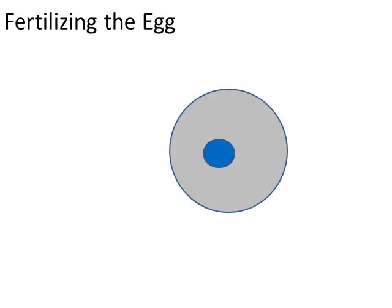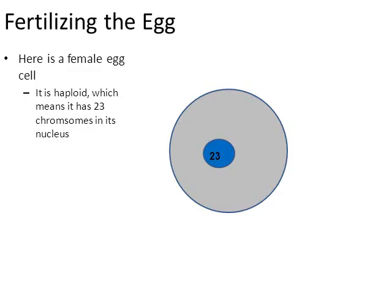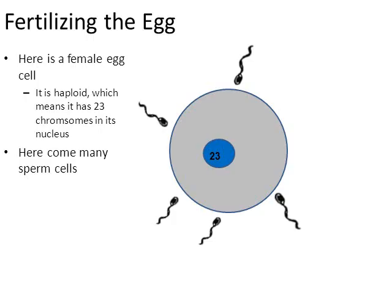Before we get into stem cells, we need to turn back the clock a little bit. Here is a woman's egg cell, and it's haploid — a vocabulary word meaning it's a cell with half the total number of chromosomes a species normally has. In humans, we normally have 46 chromosomes. Egg cells are haploid, which means they have 23. Sperm cells are also haploid, just like female egg cells, so there are 23 chromosomes in each sperm cell.